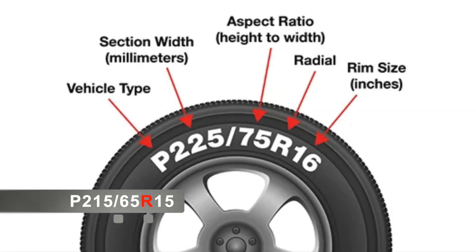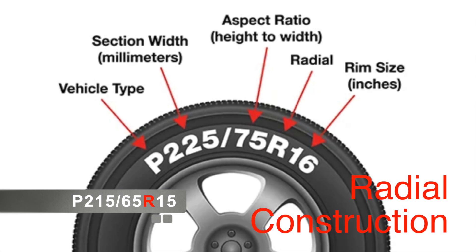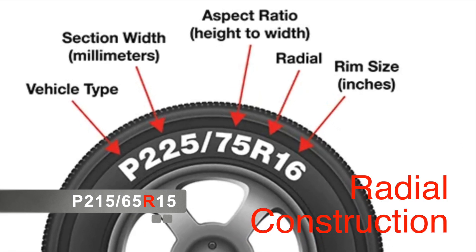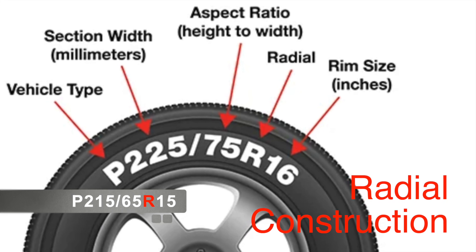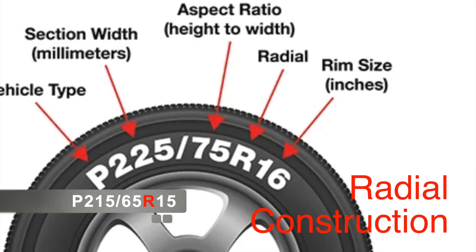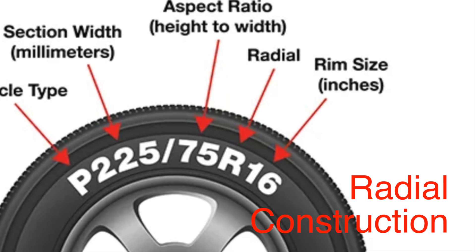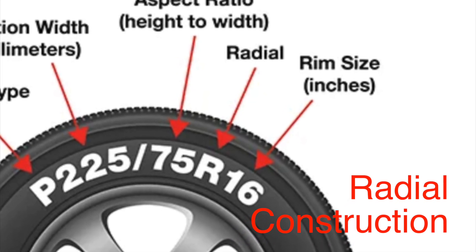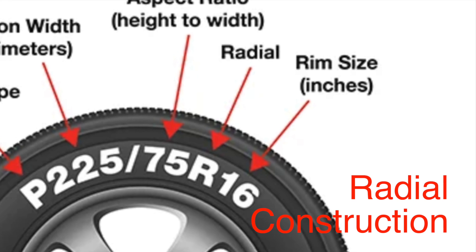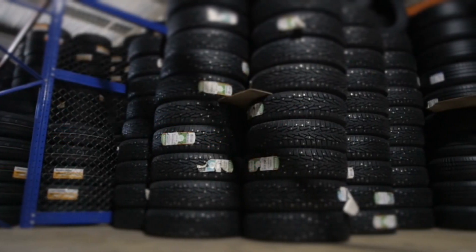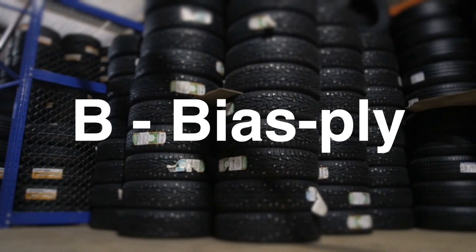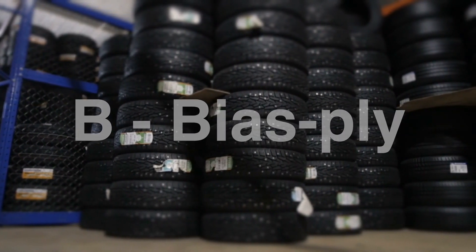Moving on, the letter R stands for Radial Construction, which is the most common type of tire construction today. Radial tires have layers of fabric with cords running radially across the tire, offering better road contact, fuel efficiency, and longer tread life. However, you might come across a B, which stands for bias ply, a construction method that is now largely outdated but still found in some specialty tires.